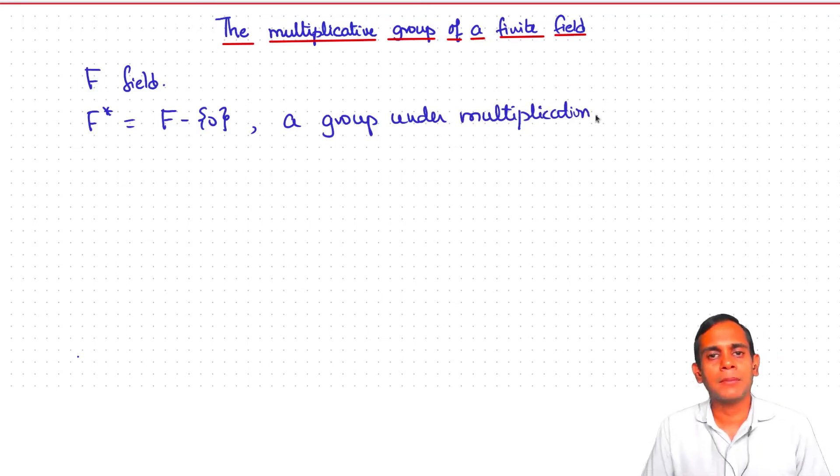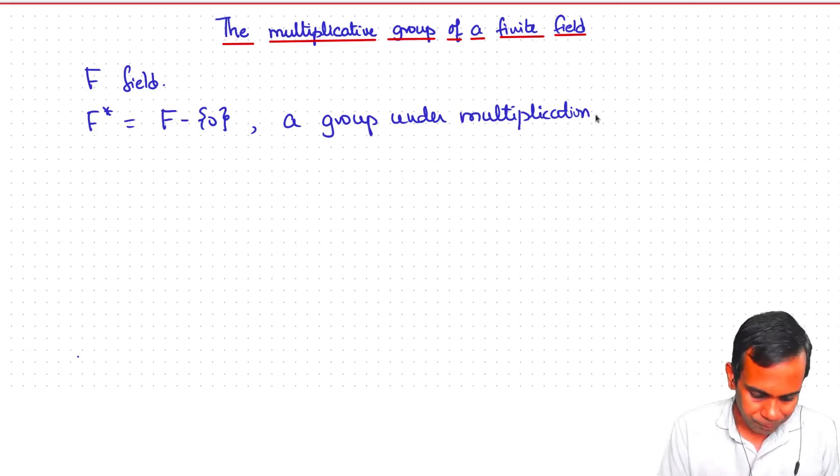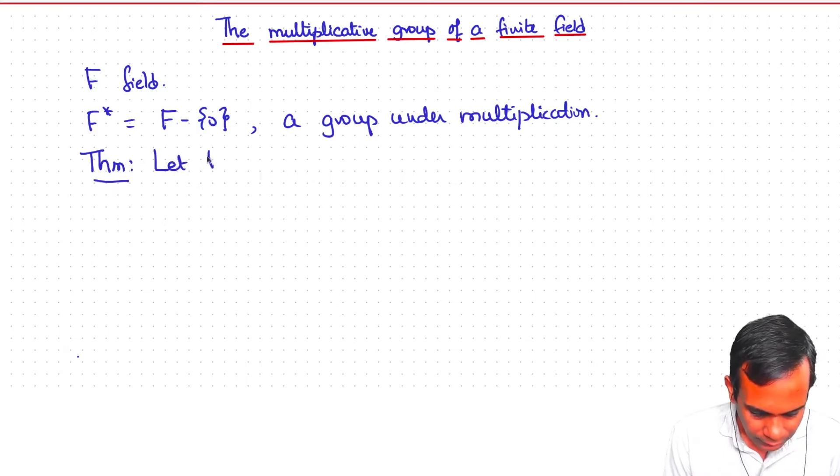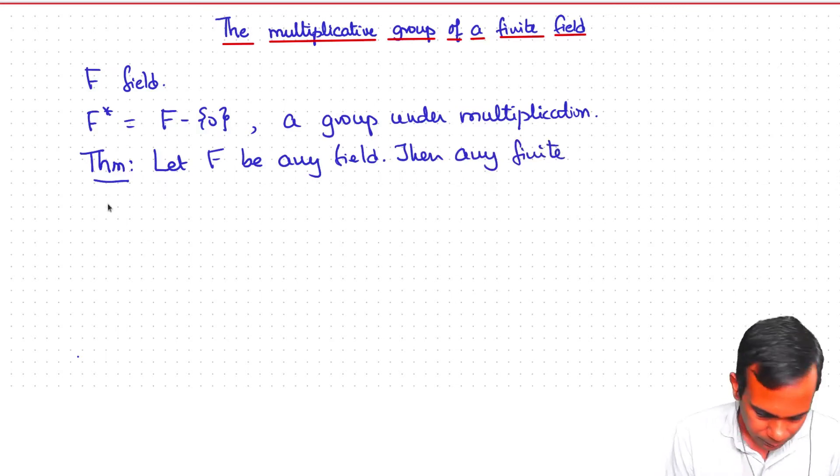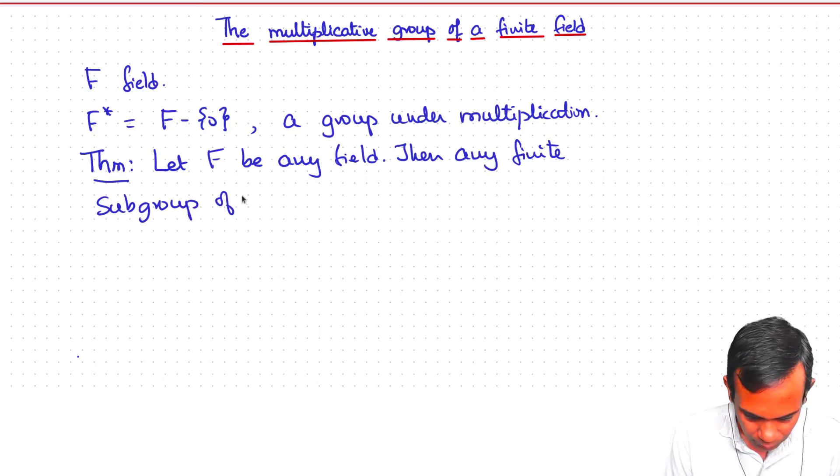It turns out that subgroups of this group, finite subgroups of this group, are all cyclic. Theorem: let F be a field. Then any finite subgroup of F star is cyclic.